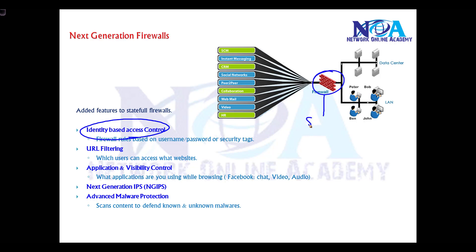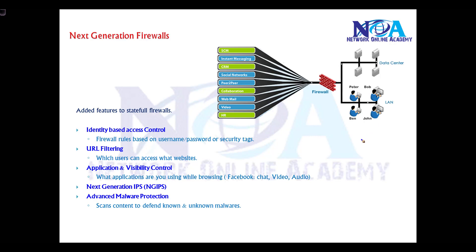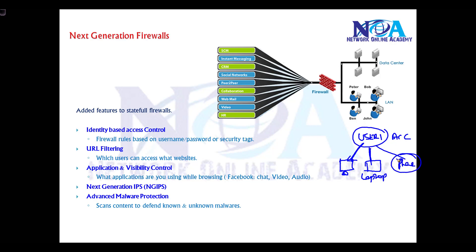We can also configure security policies based on users. For example, a user in the accounts department may use a desktop, a laptop, a smartphone, and an iPad to access network resources. It becomes very difficult to define policies per device when all four devices have different, often dynamic, IP addresses assigned by the DHCP server.